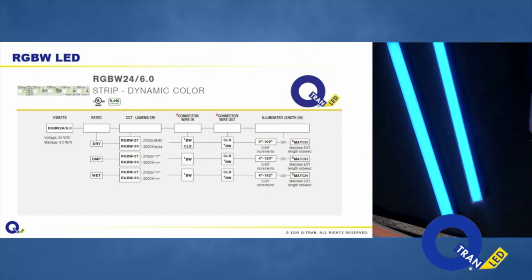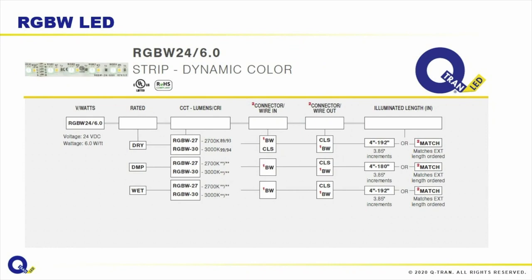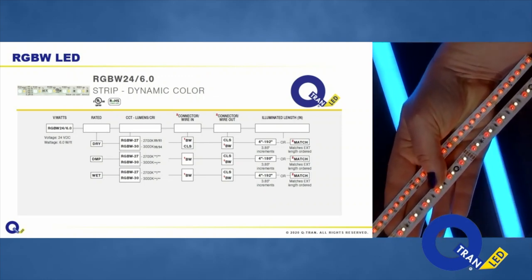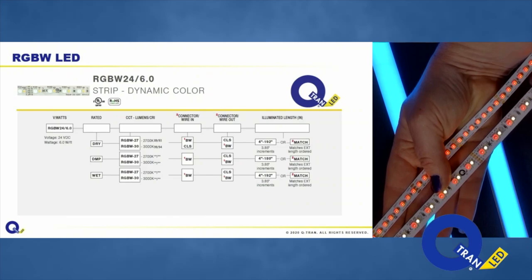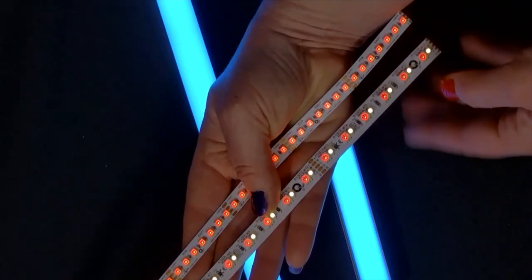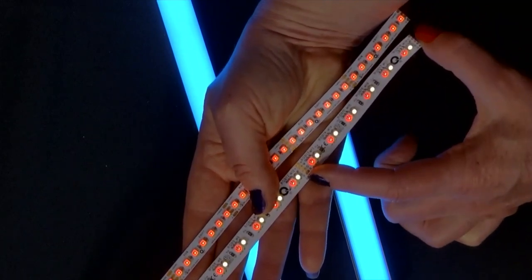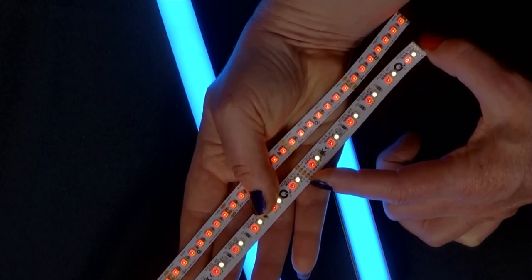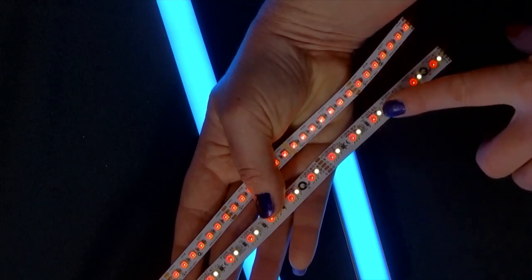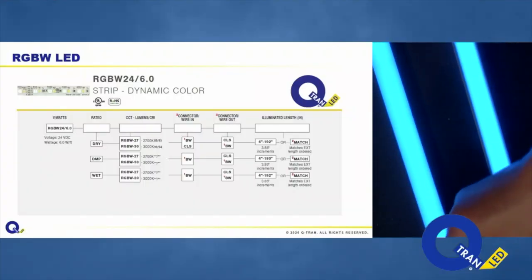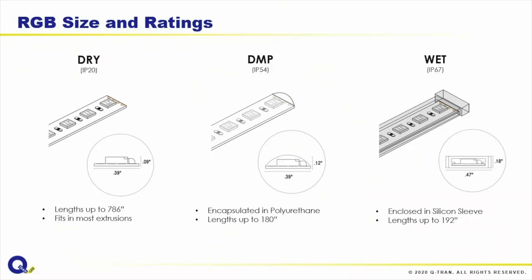Moving to our RGBW spec sheet: it's a tricolor chip with a different substrate and chip array. We still use a tricolor chip as the basis of design with a white LED next to it. We're working on PCB improvements, but currently this has a 4-inch cut point — an improvement from our previous 3.85-inch metric measurement, so we're moving from metric to imperial. You can select either 2700K or 3000K as your white chip.